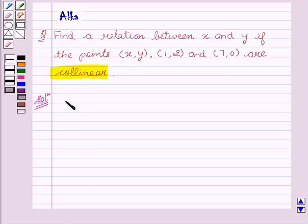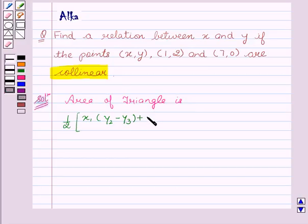We know that area of triangle is half x1 into (y2 minus y3) plus x2 (y3 minus y1) plus x3 (y1 minus y2). Now, since we are given that the three points are collinear, therefore the area of triangle will be 0.